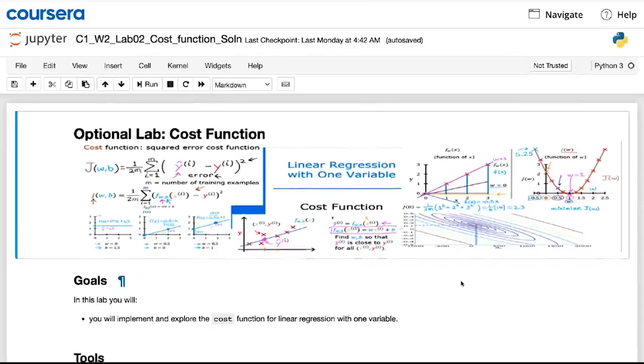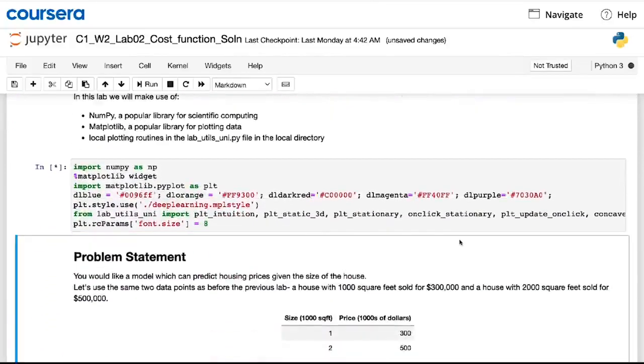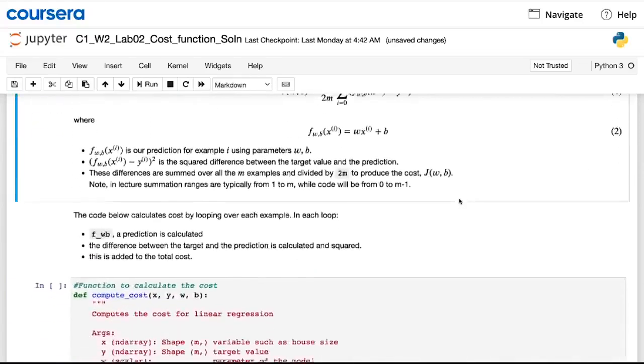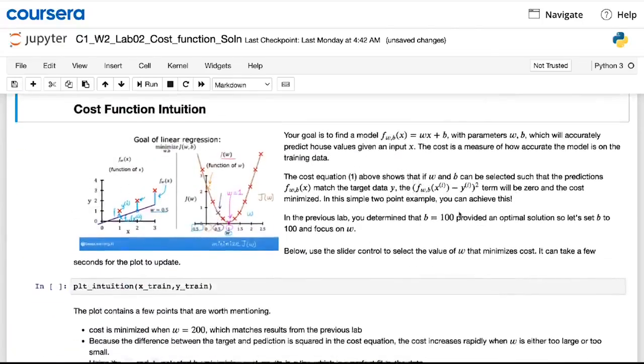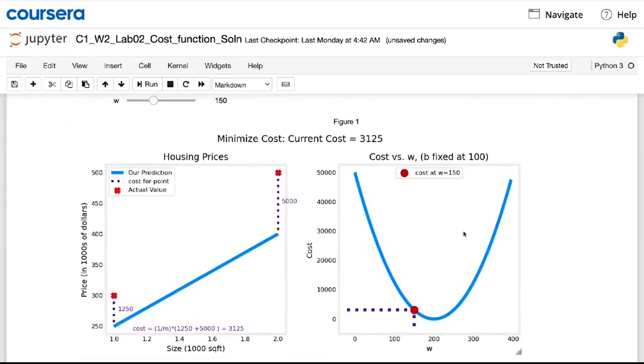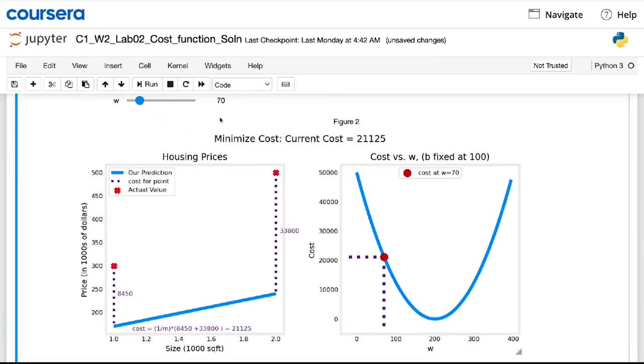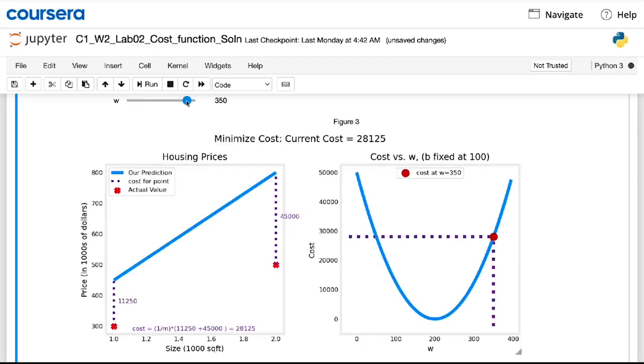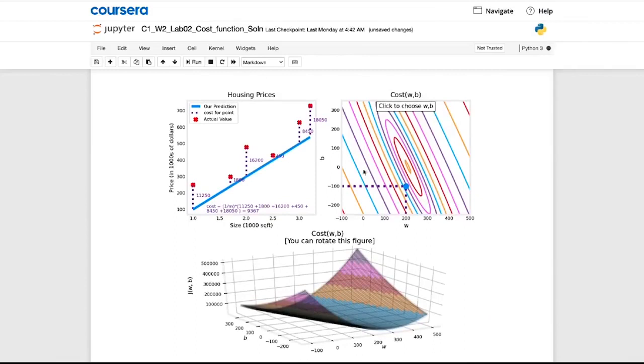In the optional lab that follows this video, you get to run some code. And remember, all of the code is given, so you just need to hit shift enter to run it and take a look at it. And the lab will show you how the cost function is implemented in code. And given a small training set and different choices for the parameters, you'll be able to see how the cost varies depending on how well the model fits the data.